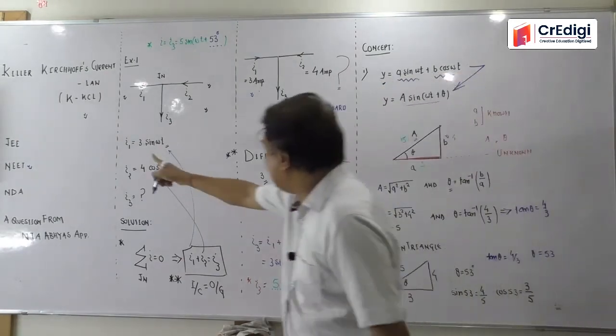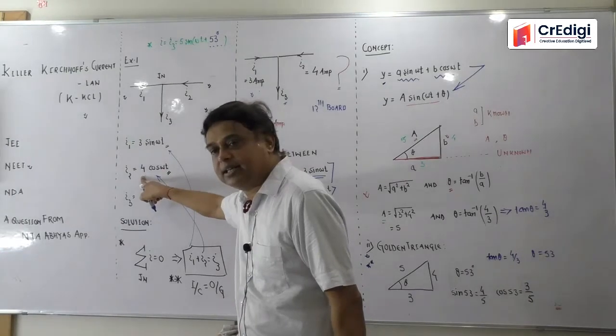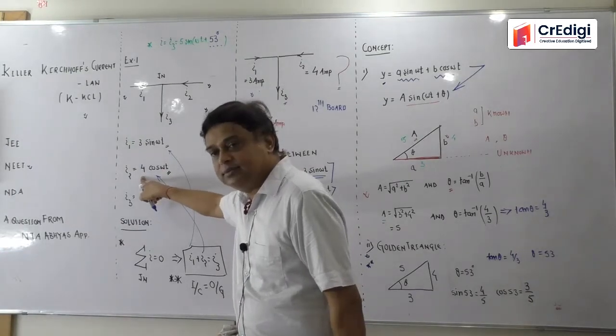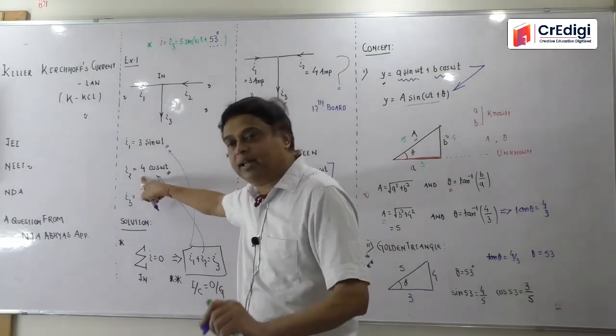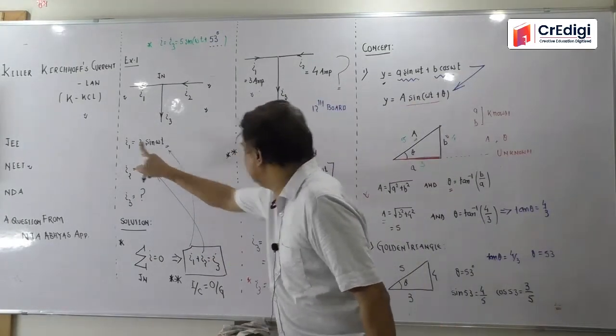If you have changed here, here 4 sine omega t and here 3 cos omega t, you can do this. You can't do it. You can't do anything. Sir, this 4 is done. Here 4, here 3. Here 5.